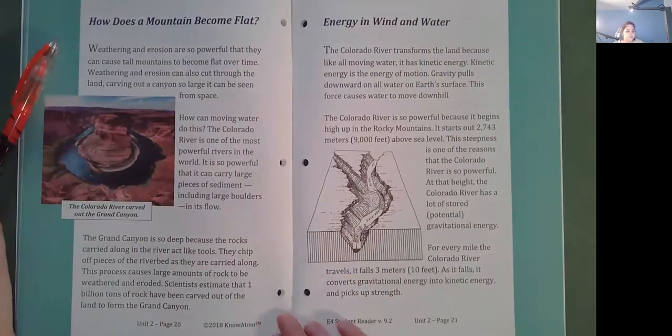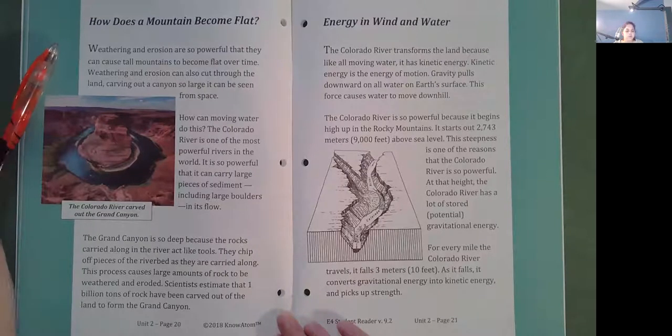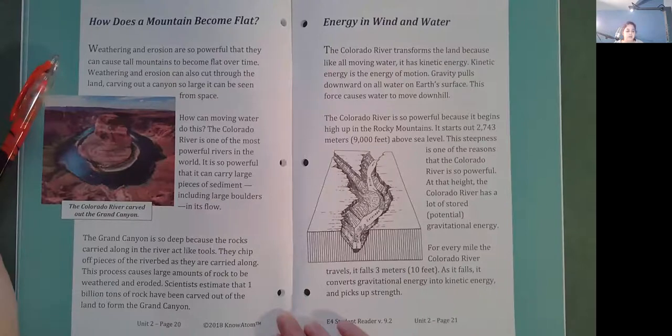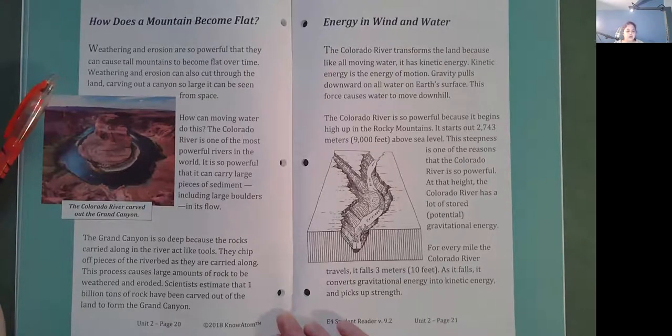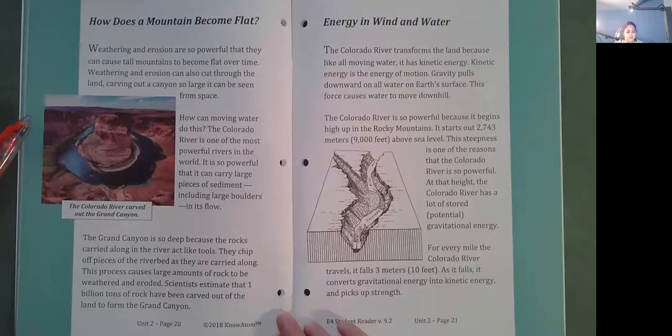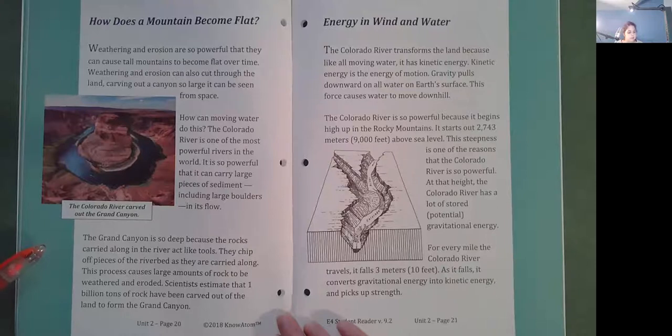How does a mountain become flat? Weathering and erosion are so powerful that they can cause tall mountains to become flat over time. Weathering and erosion can also cut through the land, carving out a canyon so large it could be seen from space. How can moving water do this? The Colorado River is one of the most powerful rivers in the world. It is so powerful that it can carry large pieces of sediment, including large boulders in its flow. The Grand Canyon is so deep because the rocks carried along in the river act like tools. They chip off pieces of the riverbed as they are carried along. This process causes large amounts of rock to be weathered and eroded. Scientists estimate that one billion tons of rock have been carved out of the land to form the Grand Canyon.